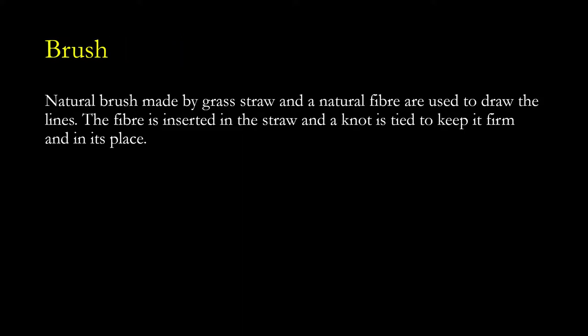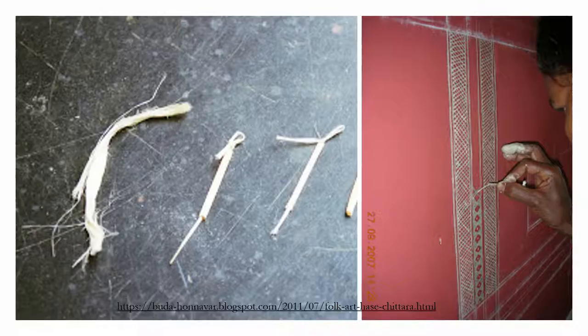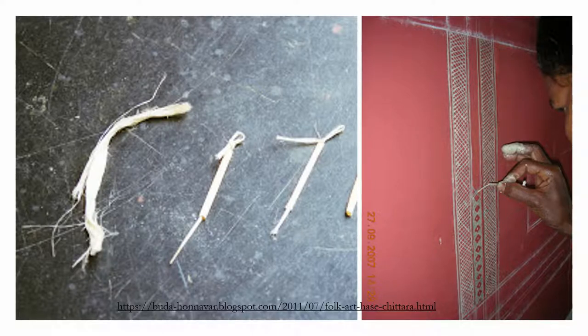The natural brush is made from grass straw and natural fiber used to draw the lines. The fiber is inserted in the straw and a knot is tied to keep it firm and in place. The brush is made with natural fiber and tied in a knot so that the artist gets a firm hold of it.